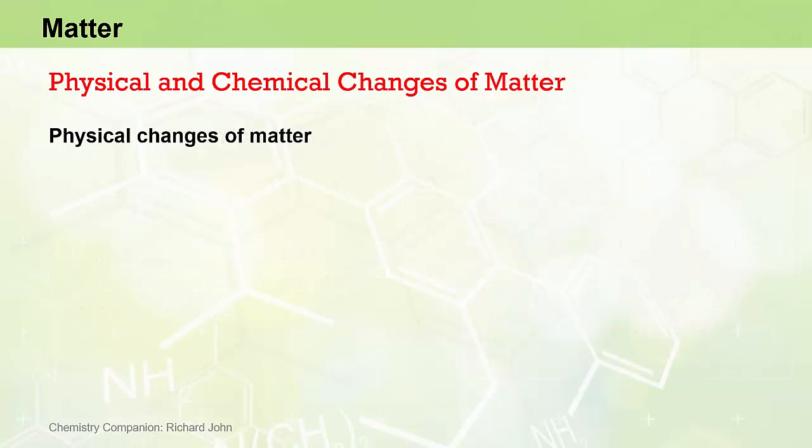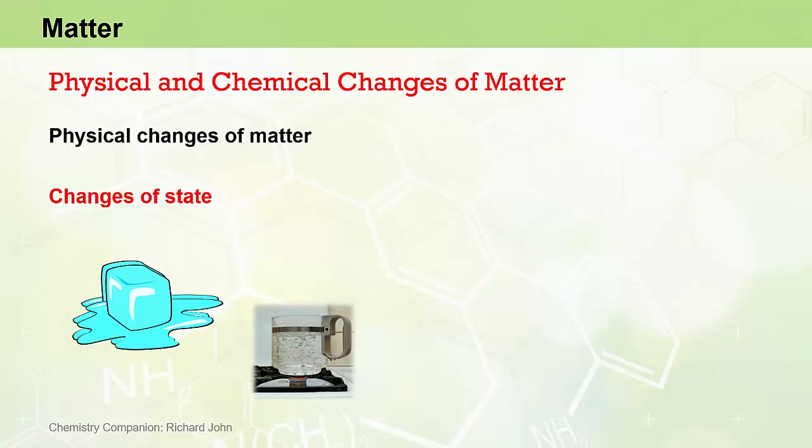We'll start by looking at physical transformations or physical changes of matter. One of the most important types of physical change is a change of state. For example, the melting of solid ice to produce liquid water or the heating of liquid water to produce water vapor are examples of physical changes of matter where no new substances are formed.